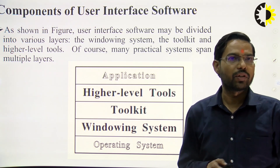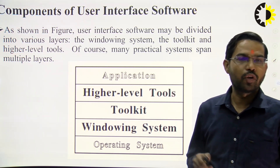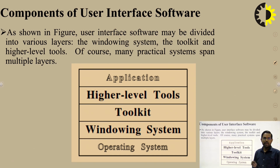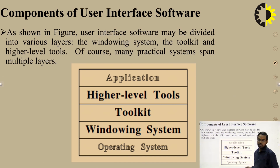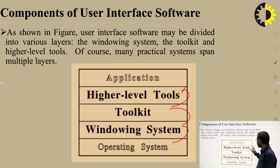As shown in the figure, user interface software may be divided into different layers. The first layer is the rendering system, then the operating system, toolkit, higher level tools, and finally the application. Many practical systems span multiple layers. The hierarchy goes: operating system → windowing system → toolkits → higher level tools → applications.